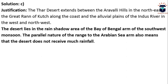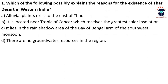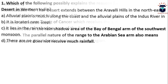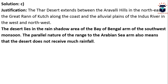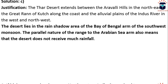The Thar Desert extends between the Aravalli Hills in the northeast and the Great Rann of Kutch along the coast, with the alluvial plains of the Indus River to the northwest — not to the east as option A states. The desert lies in the rain shadow area of the Bay of Bengal arm of the southwest monsoon. The parallel nature of the range to the Arabian Sea arm also means the desert does not receive much rainfall, related to orographic rainfall.